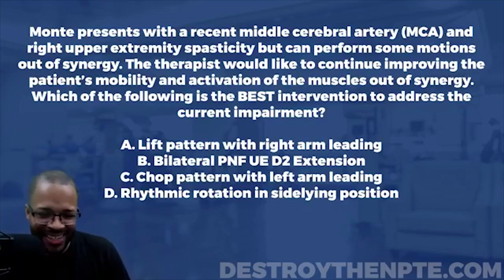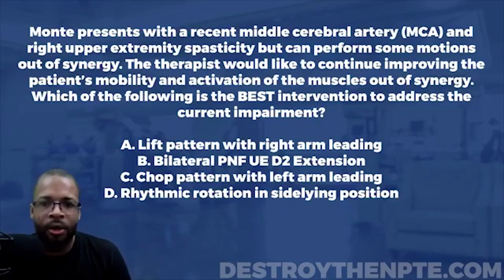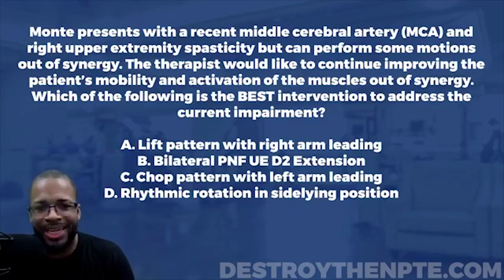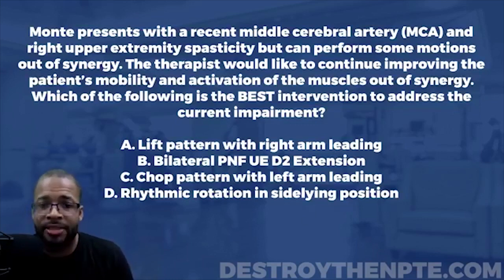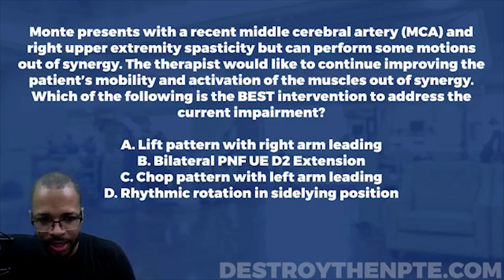Monty presents with a recent middle cerebral artery (MCA) stroke and right upper extremity spasticity, but can perform some motions out of synergy. The therapist would like to continue improving the patient's mobility and activation of muscles out of synergy. Which of the following is the best intervention to address the patient's current impairment?